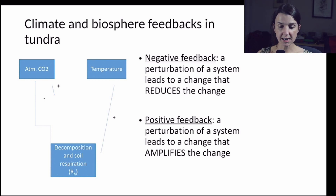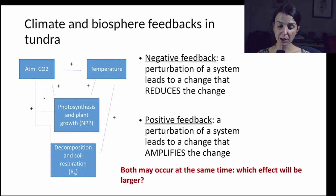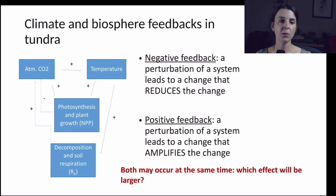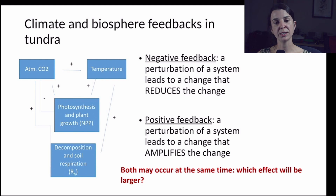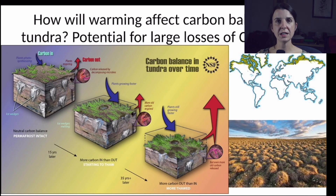Of course these negative and positive feedbacks aren't just occurring separately — it's not either/or. In fact, we expect to see them both operating at the same time. But this leads to the question: if both are occurring, which effect will be larger? We might expect the negative feedback because of vegetation, but at the same time the positive feedback because of decomposition — which one is going to win out if NEP becomes negative and they're releasing more carbon than they're sucking out of the atmosphere?